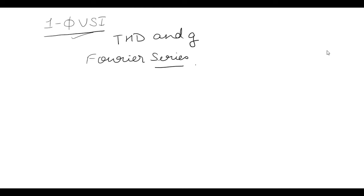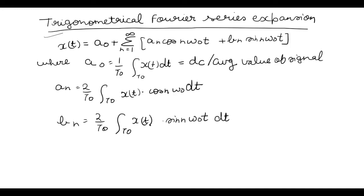For this you should be aware of some trigonometrical Fourier series expansion. Here is the trigonometrical Fourier series expansion of x(t), which you can write as a0 plus summation of n equal to 1 to infinity of an cos(ω₀t) plus bn sin(ω₀t), where a0 is 1 upon T0 integration of x(t) dt over the time period T0, which is equal to the DC or average value of the signal.